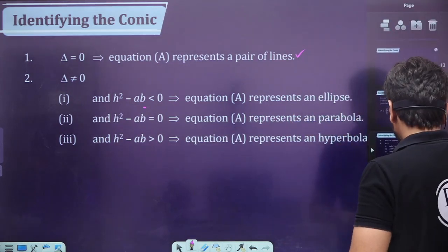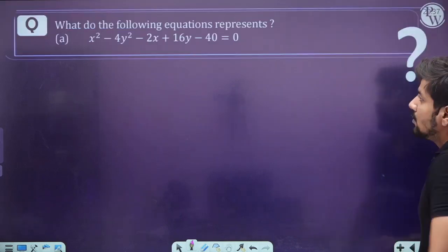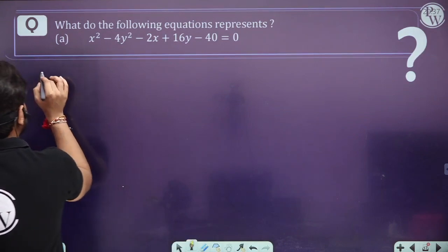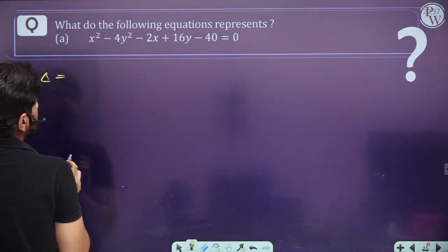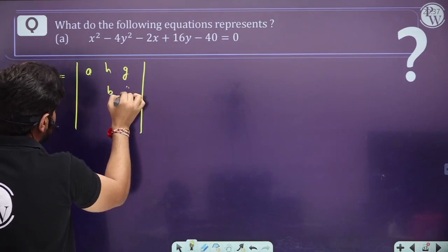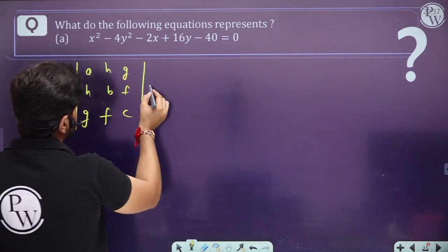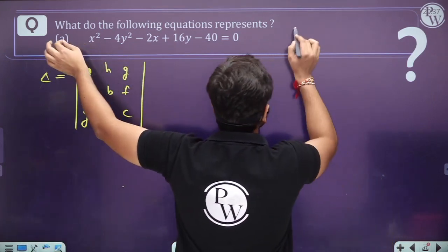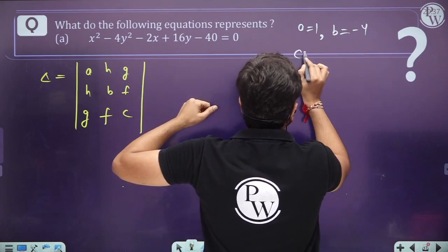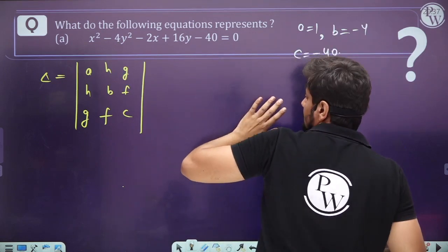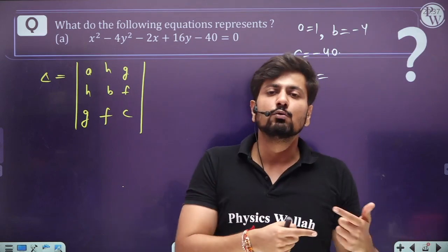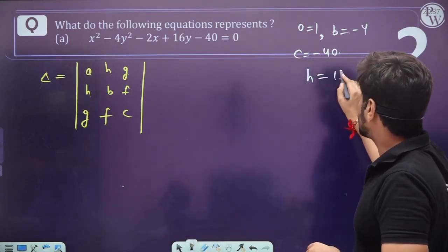Let's solve an example. For the given equation, first calculate delta. Write a, b, c in the diagonal: a = 1 (coefficient of x²), b = −4 (coefficient of y²), c = −40 (constant). h = 0 (no xy term), g = −1 (half of coefficient of x, which is −2), f = 8 (half of coefficient of y, which is 16).